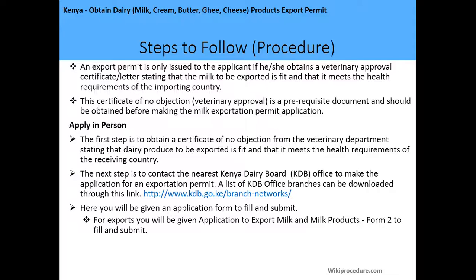Regarding the steps to follow: an export permit is only issued to the applicant if he or she obtains a veterinary approval certificate or letter stating that the milk to be exported is fit and that it meets the health requirements of the importing country. This certificate of no-objection or veterinary approval is a prerequisite document and should be obtained before making the milk exportation permit application.